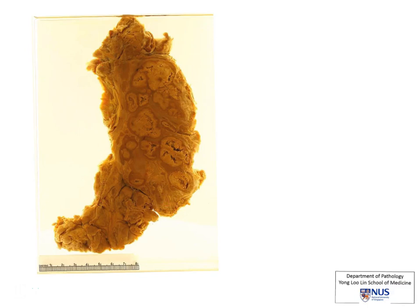In this picture, we're looking at a whole bunch of lymph nodes that have been stuck to each other. When lymph nodes stick to each other clinically, they are known as matted. We would be able to palpate them if they were in a superficial site, and they would feel like a firm mass of nodes.